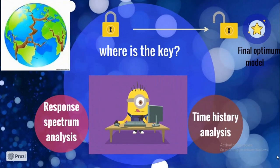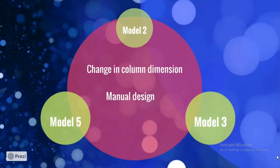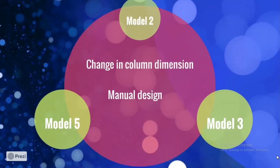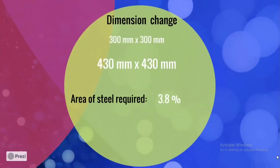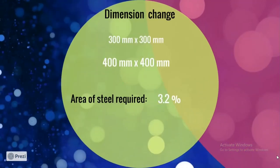After static analysis comes seismic analysis. In order to find the ultimate optimum model, we performed two types of seismic analysis: response spectrum and time history analysis. In order to survive earthquake loads, we had to slightly increase the column dimensions for our selected models, and this increase was least for the X bracing configuration.